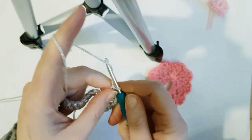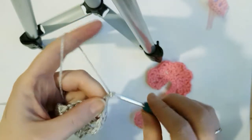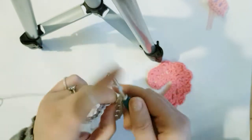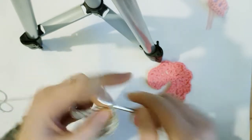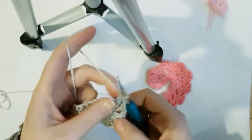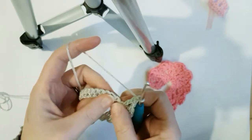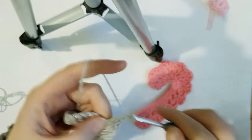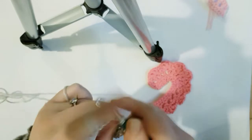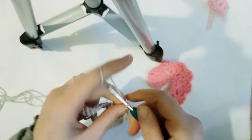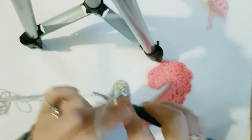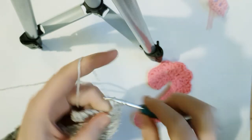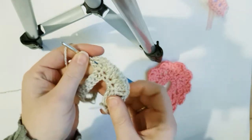Okay, so you are going to do that 4 times in total. So chain 1, double crochet in the next, chain 1, double crochet in the same. So that is 2 V stitches. Chain 1, move to the next stitch, double crochet, chain 1, double crochet in the same. 3 V stitches, and then last one, chain 1, double crochet, chain 1, double crochet. You see how that has now made your work turn.